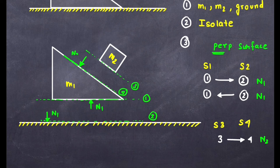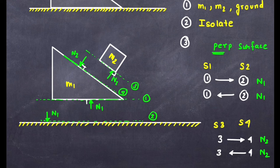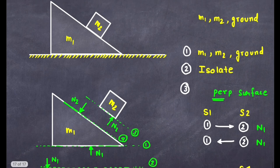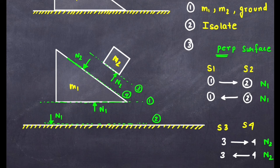By Newton's third law, surface 4 exerts the same force N2 but in the opposite perpendicular direction on surface 3. Note that all contact forces are perpendicular to the surface. No more surfaces are in contact. Step 4 — non-contact forces: weight m1g acts downward on m1, and weight m2g acts downward on m2. Weight always acts downwards towards the surface of the earth.